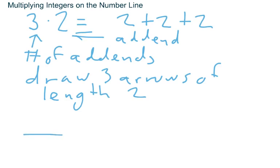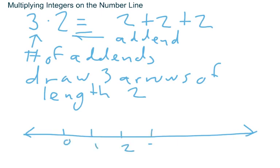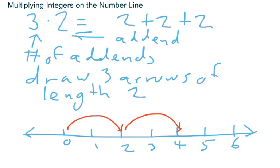Let's do that. We know that additions always begin on the number line at zero. Everything's positive in this example. Three times two would mean three arrows — draw three arrows of length two, one after the other after the other — two plus two plus two, and that's very plainly equal to six.